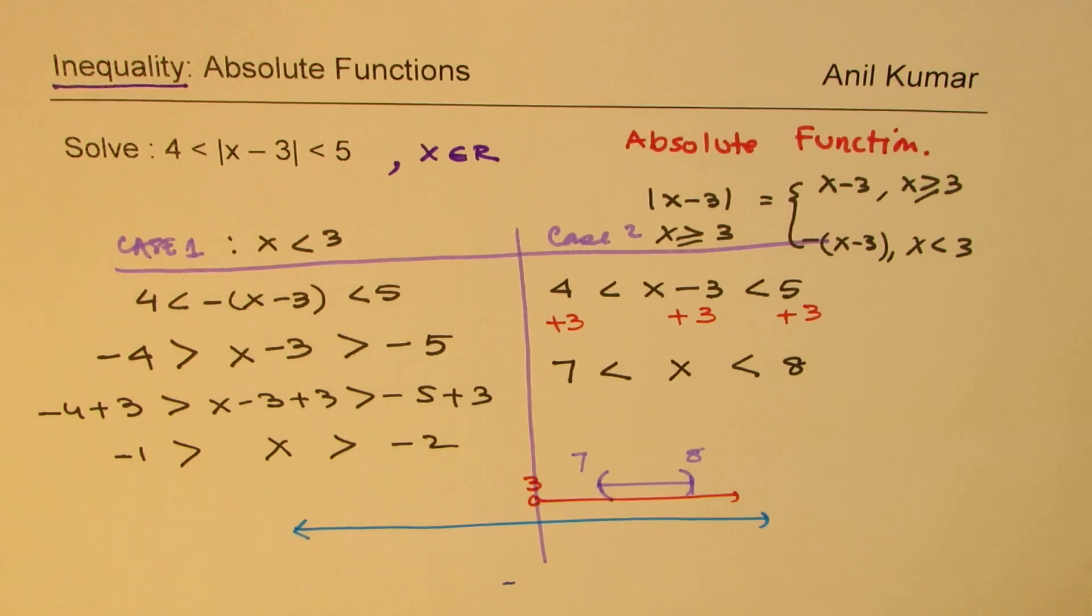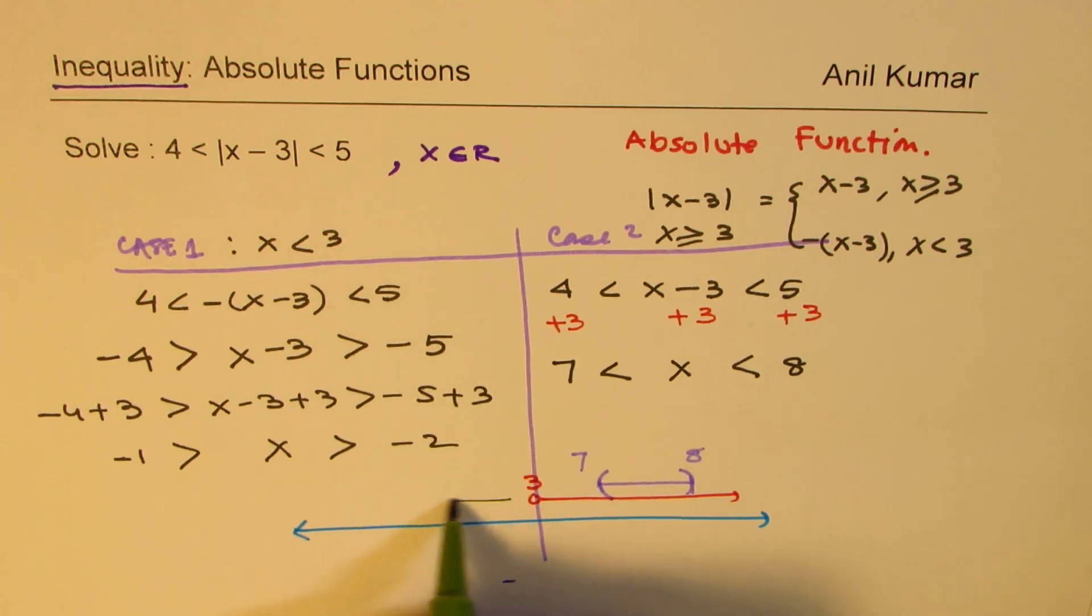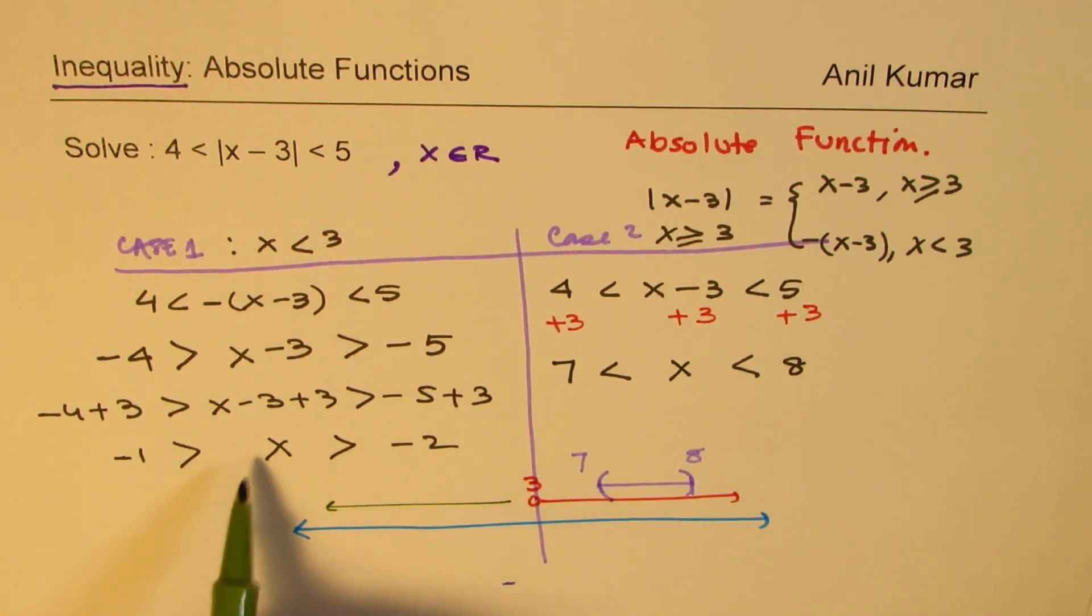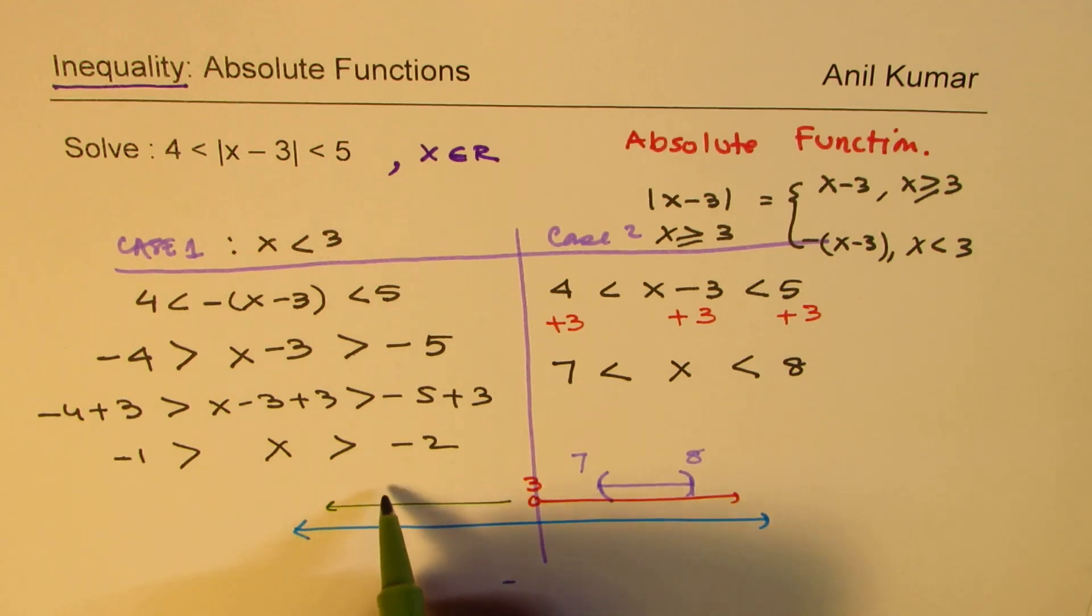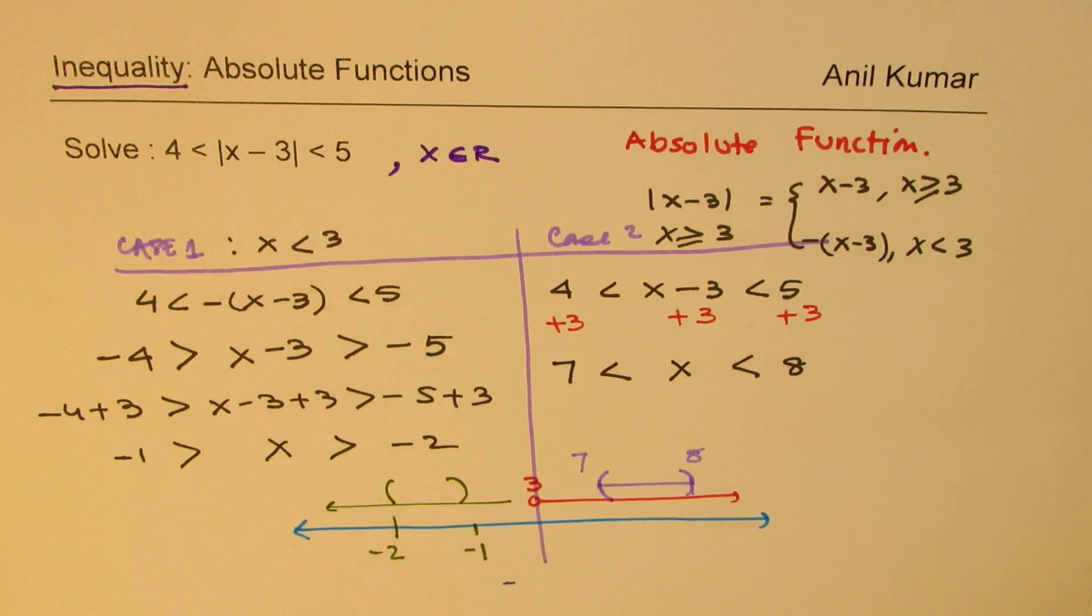So while working on the other side, which is less than 3, we found two solutions which is between minus 2 and minus 1. So this happens to be at minus 2 and minus 1. So that becomes a solution.